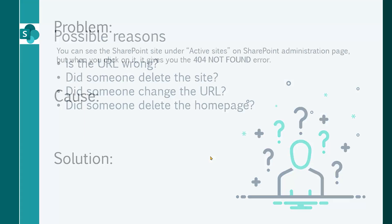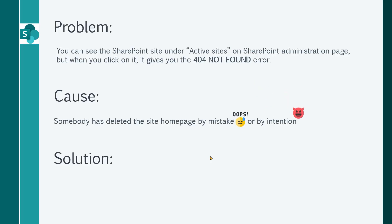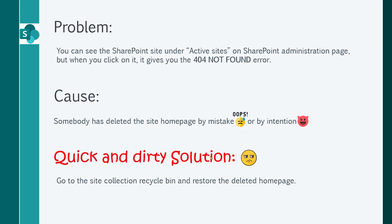The site exists, nobody has deleted it, the URL is correct, but when you go to the site you cannot open it. That 404 error is simply this: you can see the SharePoint site under active sites in the SharePoint administration page, but when you click on it, it gives you 404 not found. The cause is very simple — somebody deleted the site homepage by mistake or by intention. The solution is also simple: go to the site collection recycle bin and restore the deleted homepage. That's the quick solution. If you're too busy, go to the site recycle bin and take care of it. Otherwise, stay with me and I'll show you how to handle it like a pro.